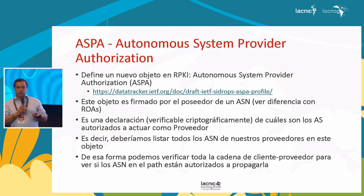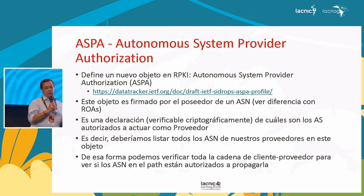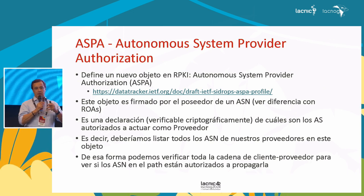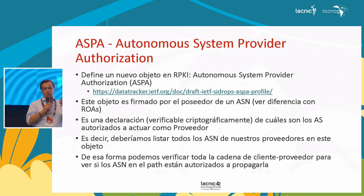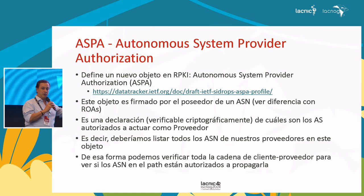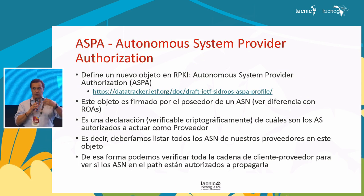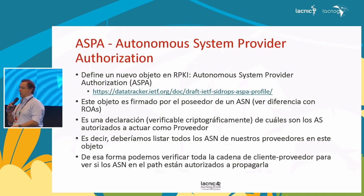The other topic—these are still drafts under discussion. ASPA—Autonomous System Provider Authorization—seeks a solution where not only the origin AS is checked but the entire AS path. This is a major change because ASPA objects are new objects, not ROAs. These are objects signed by the owner of the autonomous system, compared to ROAs which are signed by those who hold the prefixes.